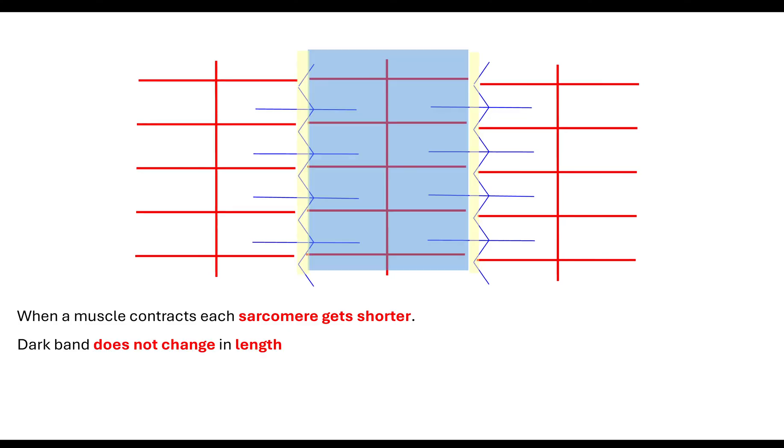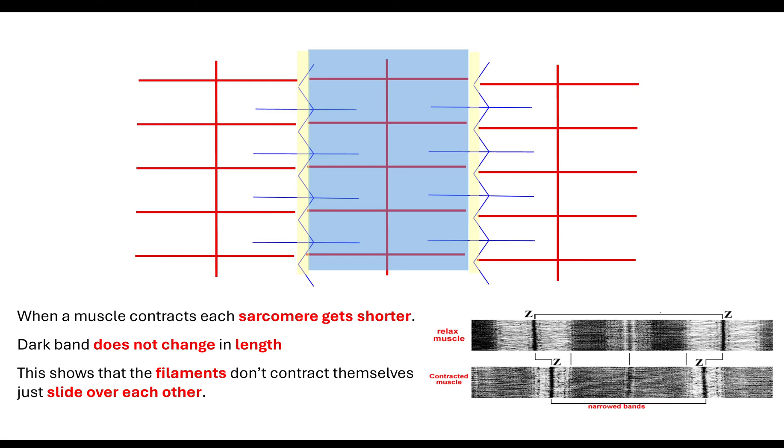what's going to happen to each of the sarcomeres is that they're actually going to get shorter. That's because the dark band is not changing, that thick filament is anchored. What's actually happening is that the actin, the thin filament, is being pulled towards the M line.